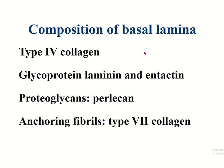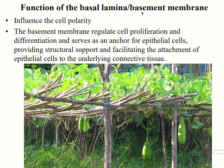The composition of the basal lamina includes type IV collagen, glycoproteins, laminin, entactin, proteoglycans, perlecans, and anchoring filament type VII collagen. The functions of the basal lamina and basement membrane include influencing cell polarity, regulating cell proliferation and differentiation, serving as an anchor for epithelial cells, providing structural support, and facilitating attachment to the underlying connective tissue.